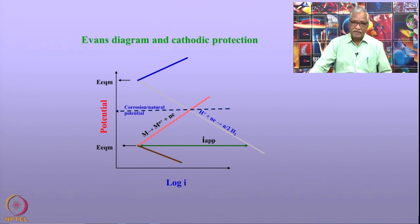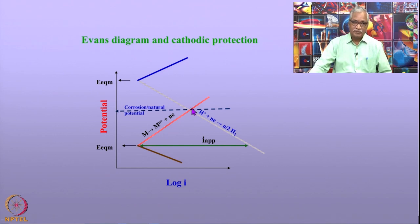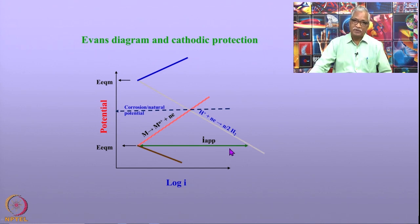In cathodic protection criteria, we bring down this potential from the natural potential to as low as possible. Ideally, you should bring it down to the equilibrium potential as shown in the diagram. Below the equilibrium potential, the metal is completely immune to corrosion. Any potential at which you hold the metal has a corresponding corrosion current. To completely prevent corrosion, you need to bring the potential to the equilibrium potential, but that also means we need to supply a large amount of current.